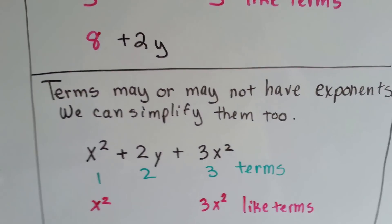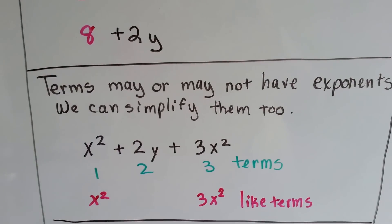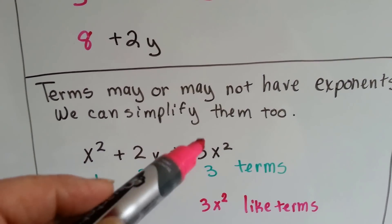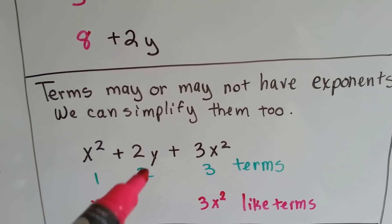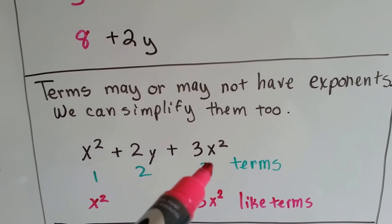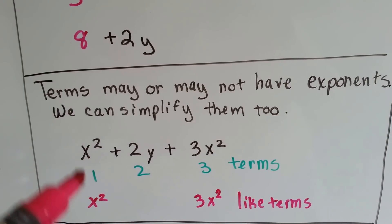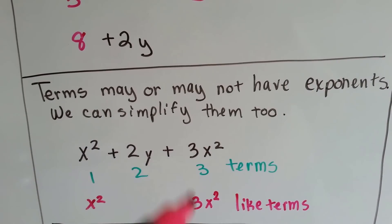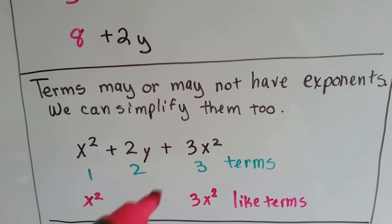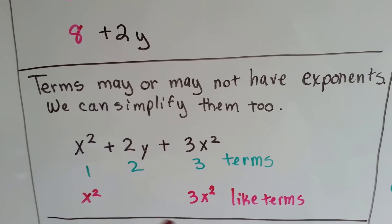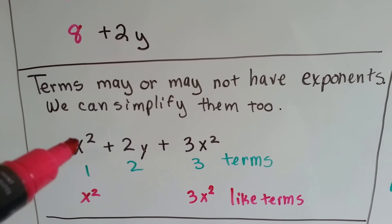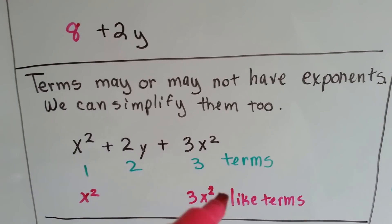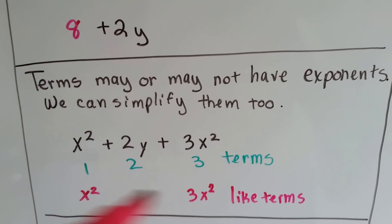Terms may or may not have exponents, and we can simplify them too. x squared plus 2y plus 3x squared is 1 term, 2 terms, 3 terms. And x squared and x squared are the same, even if it's got a 3 in front of it — which is called a coefficient, but we'll get into that later. So x squared and 3x squared are like terms. We can combine them.